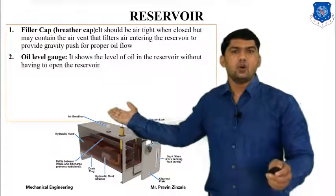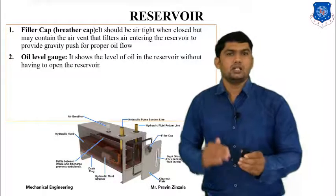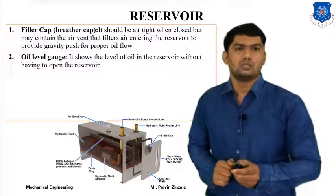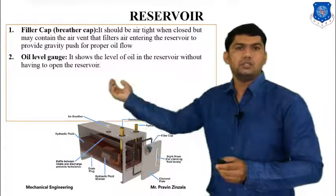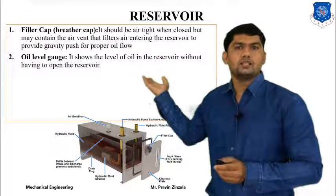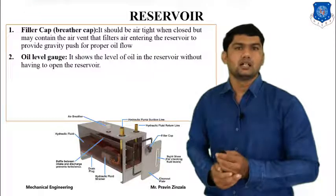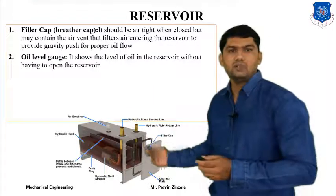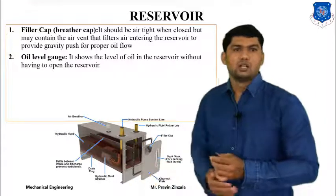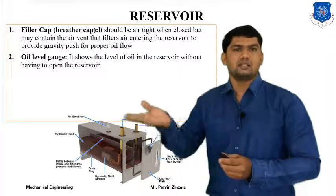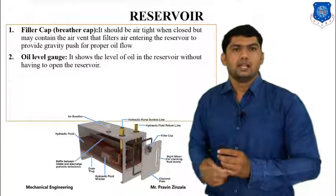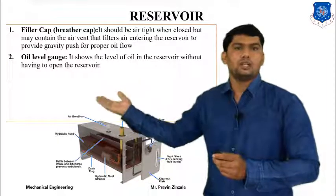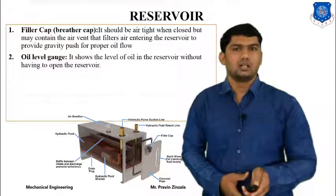The second component is the oil level gauge. During continuous operation, we need to maintain the oil level in the reservoir. The oil level gauge is used to measure the level of oil in the reservoir without opening it. There is a glass tube used for the reservoir through which we can easily measure the level of oil and directly measure the quantity of oil in litres available in the reservoir.